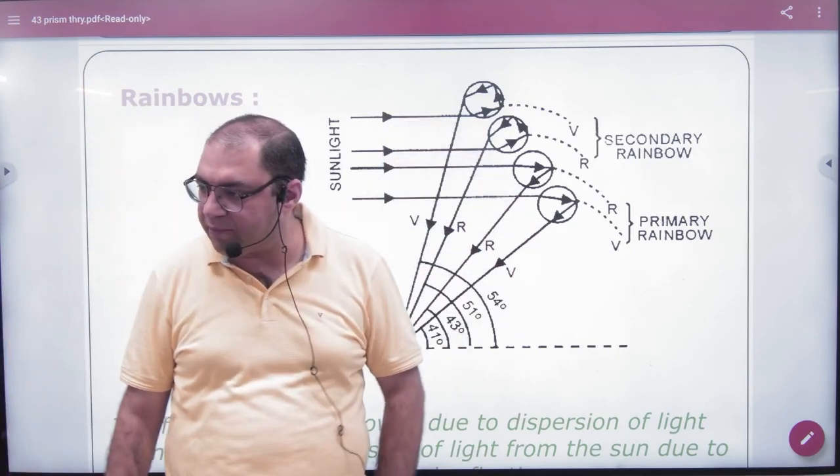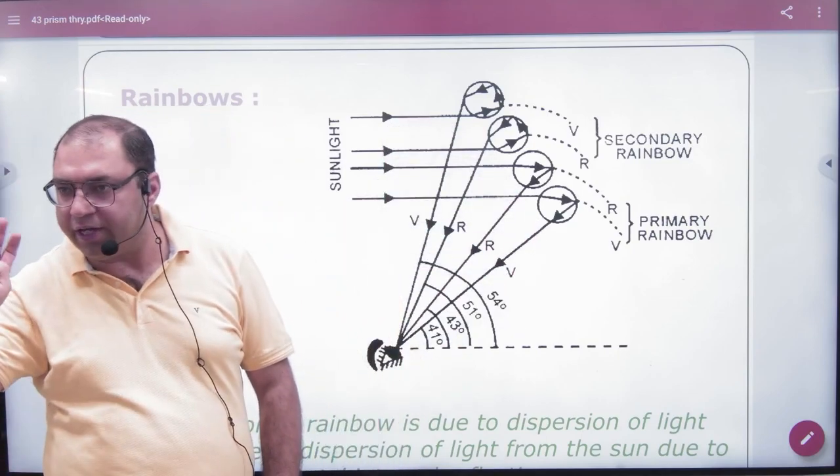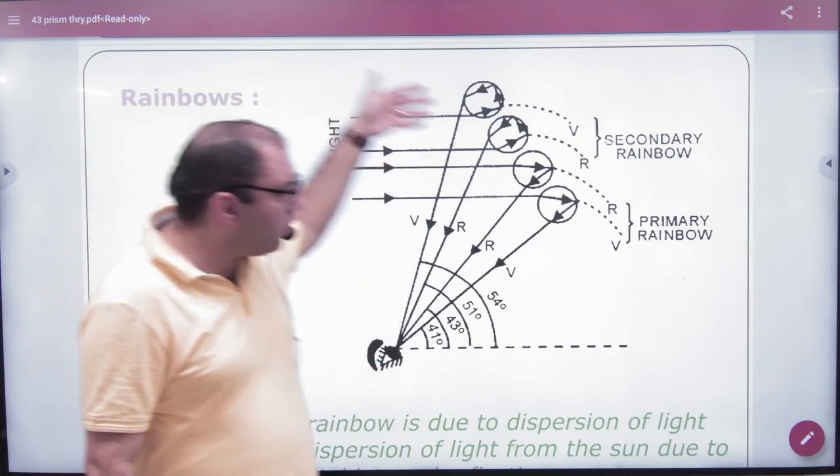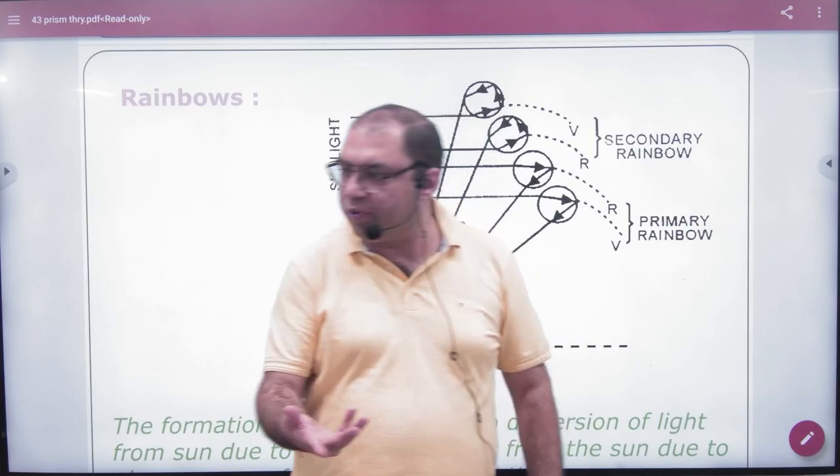How does the prism work? The particles of water are refracting the light in the air. Why will it come back from reflection?